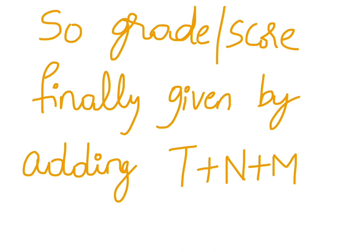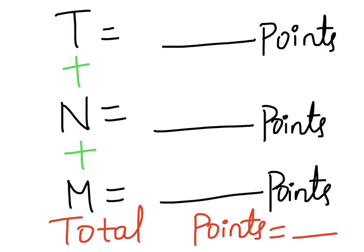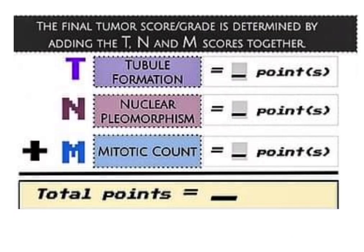Grading or scoring is finally given by adding T, N, and M. For tubule formation, nuclear pleomorphism, and mitotic count, we add the points from each category to give total points for grading breast cancer by the modified Bloom-Richardson grading system.